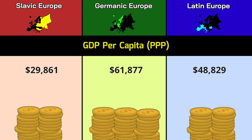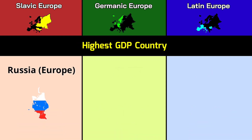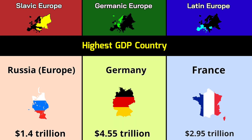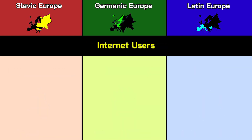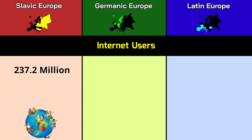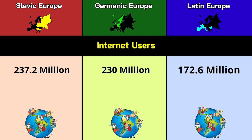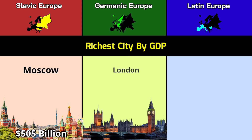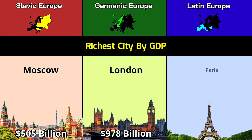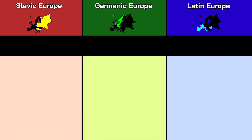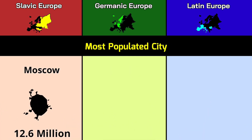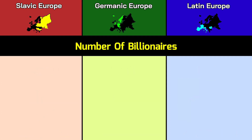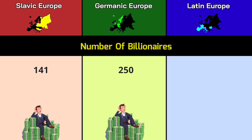Highest GDP country: European Russia 1.4 trillion dollars, Germany 4.55 trillion dollars, France 2.95 trillion dollars. Internet users: 237.2 million, 230 million, 172.6 million. Richest city by GDP: Moscow 505 billion dollars, London 978 billion dollars, Paris 934 billion dollars. Most populated city: Moscow 12.6 million, London 9.5 million, Paris 11.1 million.